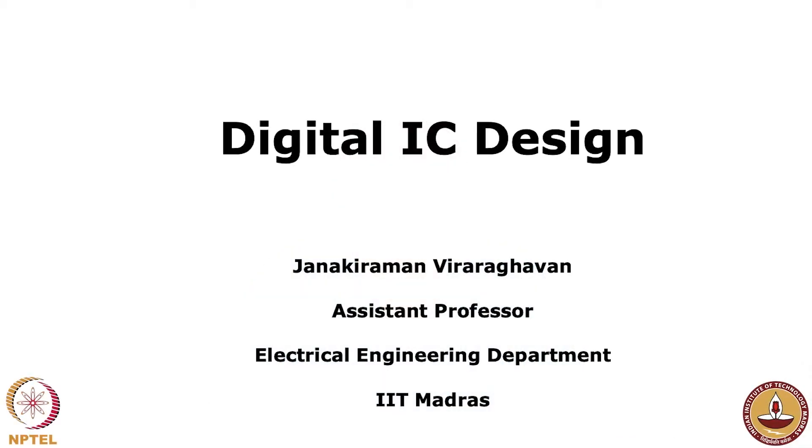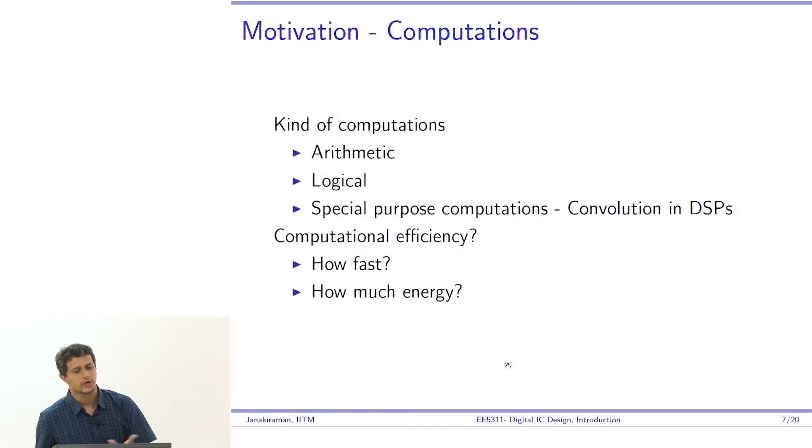Jokes apart, it's interesting to note that though artificial neural networks were widely popular in the 80s and 90s, it is improved hardware and improved computational efficiency that has made deep learning widely popular in today's world. What is computational efficiency? One is how fast, second is how much energy.